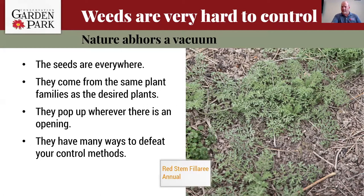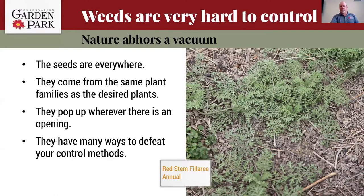The seeds come from everywhere and are in most soils throughout the valley. Every landscape has weed seeds. They come from the same plant families as your desired plants — your favorite asters have plenty of weedy asters, for instance. So anything we use to control a weedy aster is also going to kill your favorite asters. Weeds pop up wherever there is an opening, wherever there's bare ground or a lack of mulch. They have a lot of different ways to defeat your control method, which is why weeds are really hard to control. You have permission to be frustrated.